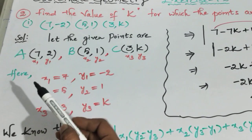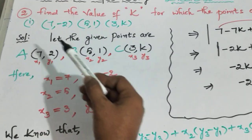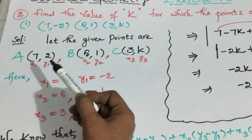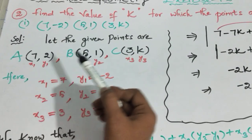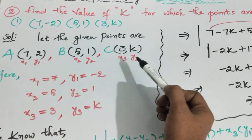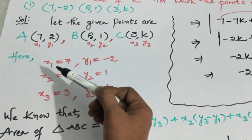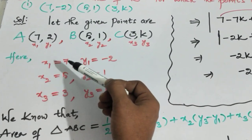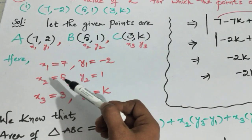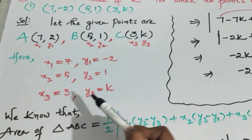From the given points, we identify the coordinates: x1 is 7, y1 is -2, x2 is 5, y2 is 1, x3 is 3, and y3 is K.